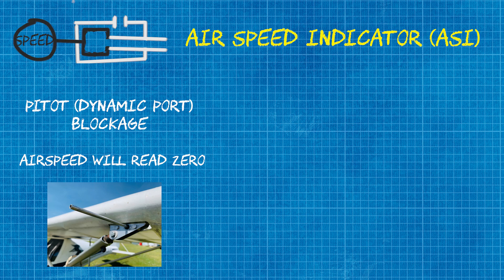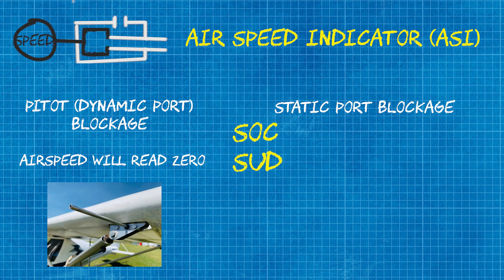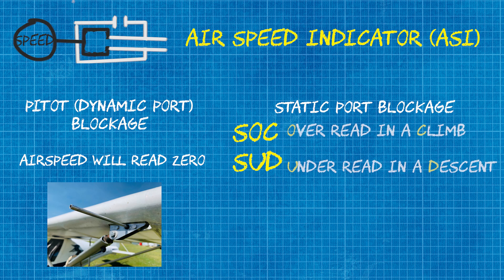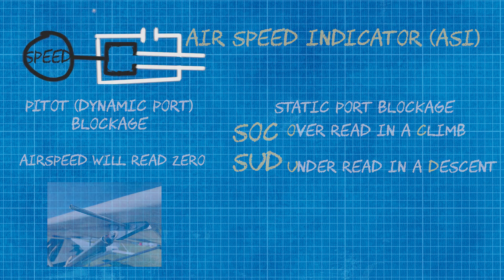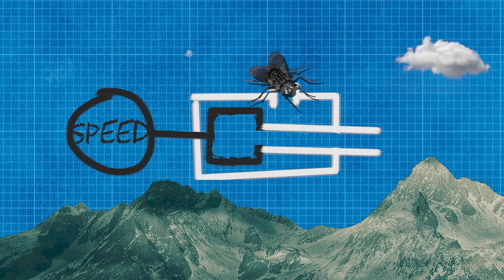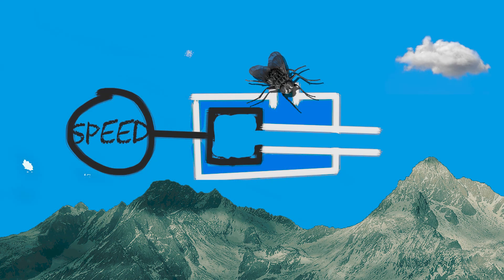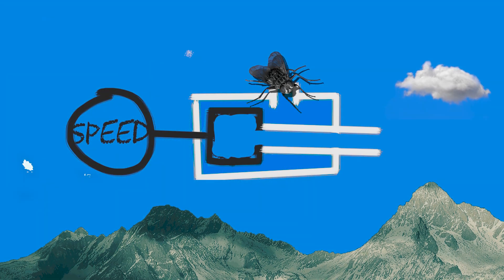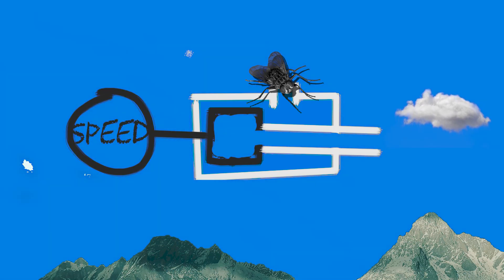If the static port is blocked, then things get a bit more interesting. Whilst we are climbing, the airspeed indicator will over-read. In a descent the opposite will happen and the airspeed indicator will under-read. The reason this happens is when the static air pressure port gets blocked, the air pressure stays the same inside the capsule. However, as we climb the air entering the pitot tube is reducing in air pressure, whereas the opposite is happening as we descend.